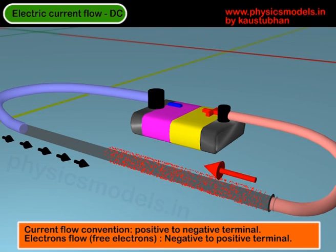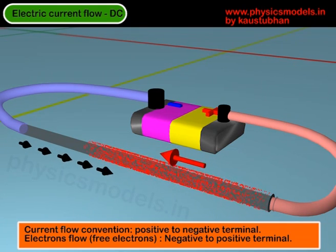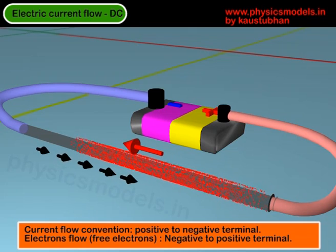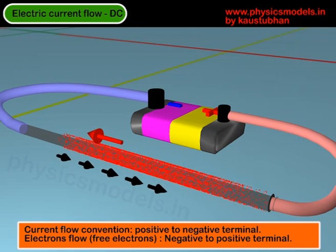Now, if you look at this animation, the current convention is that it flows from the positive terminal to the negative terminal, always for a DC circuit.